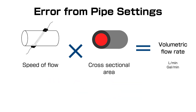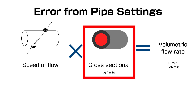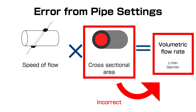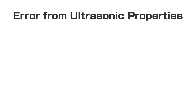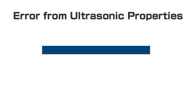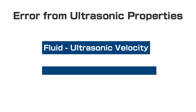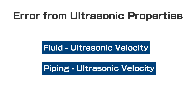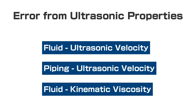If the sensor does not know the correct internal cross-sectional area of the pipe, the flow rate reading will be inaccurate. The last thing we'll discuss is the ultrasonic properties of the pipe or fluid. The properties in question are the ultrasonic velocity of the fluid, the ultrasonic velocity of the pipe material, or the kinematic viscosity of the liquid. It's important that the sensor knows the properties of the fluid or piping it's being used on to ensure optimal accuracy.